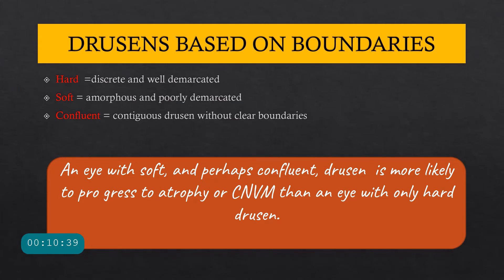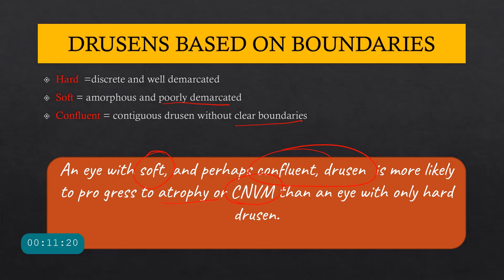Drusen can also be classified based on their boundaries: hard drusen have well-demarcated discrete boundaries, soft drusen have poorly demarcated boundaries, and confluent drusen are soft drusen that coalesce together without clear boundaries. An eye with soft or confluent drusen is more likely to progress towards atrophy and develop a choroidal neovascular membrane, compared to an eye with only hard drusen. Soft and confluent drusen carry a greater risk of converting to wet ARMD.